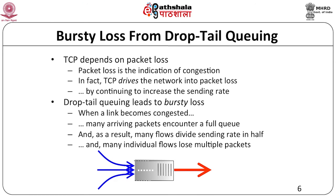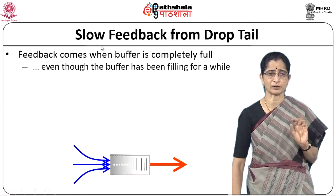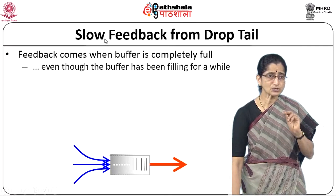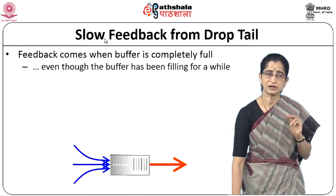When a link becomes congested, more and more packets come into the queue and all of them are being dropped. Then TCP's congestion control mechanism comes into action and the sending rate decreases. This bursty loss is a major problem with the drop-tail queuing approach. Can we do better? The issue is that feedback from drop-tail queuing comes only when the buffer is completely full, even though the buffer has been getting fuller for quite a while.